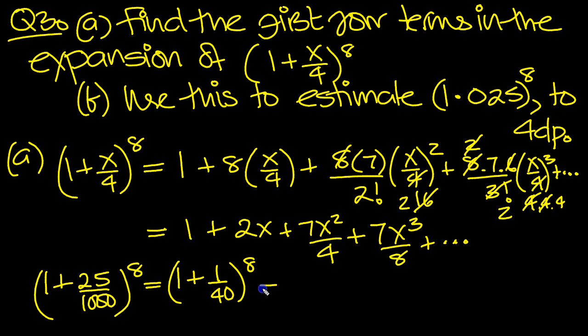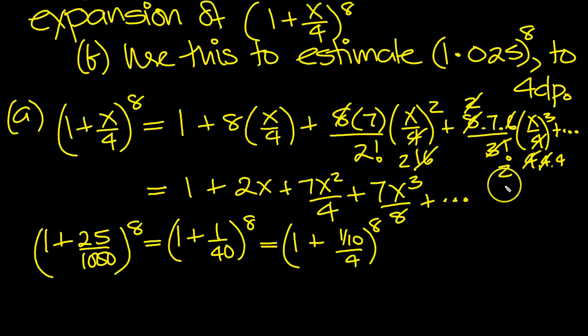To the 8, so that's equal to 1 plus. Now if I split this up with a 4 underneath, on the top you need a 10th over 4 will be a 40th. So that's equal to then, so x is a 10th then, isn't it? So we put x as equal to a 10th then. 1 plus 2 times 1 tenth, 2 over 10.